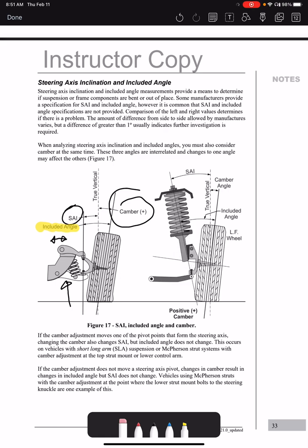Which means if we're adjusting where the strut mounts to the spindle, you're going to be able to adjust the camber angle and the included angle will then also change.